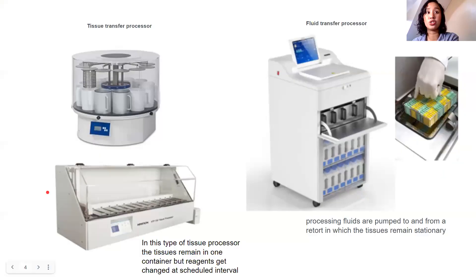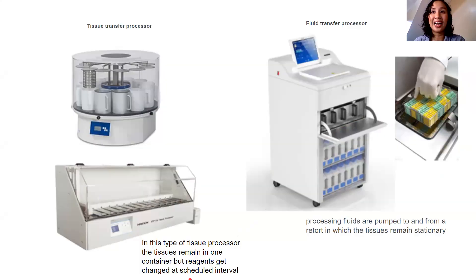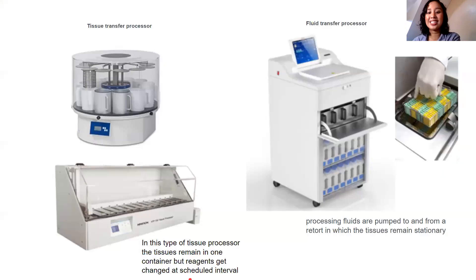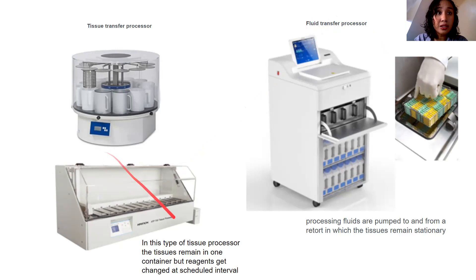In tissue transfer processing, the tissue is transferred from one reagent to another. For the fluid transfer processor, the tissue remains stationary and the fluids are pumped into the cassettes. So in fluid transfer, the fluid is the one being transferred, while in tissue transfer, the tissue is the one being moved.